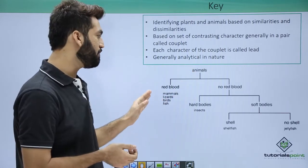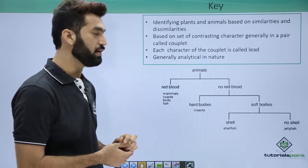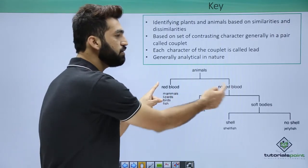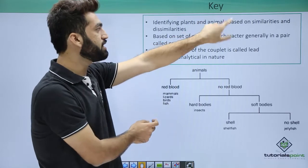Let's suppose you have animals. The animals can be red-blooded or non-red-blooded. If it is red-blooded, animals can be mammals, lizards, birds, or fish. We can talk about both of them being animals, so you talked about similarities.